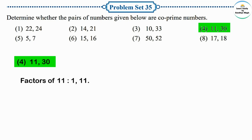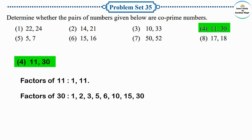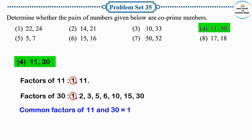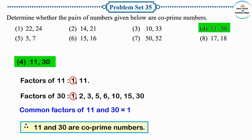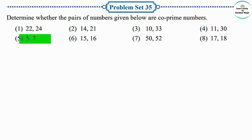Next pair: 11 and 30. Factors of 11: 1 and 11. Factors of 30: 1, 2, 3, 5, 6, 10, 15, and 30. The only common factor in these two groups is 1. Numbers which have only one as a common factor are called co-prime numbers, so 11 and 30 are co-prime numbers.